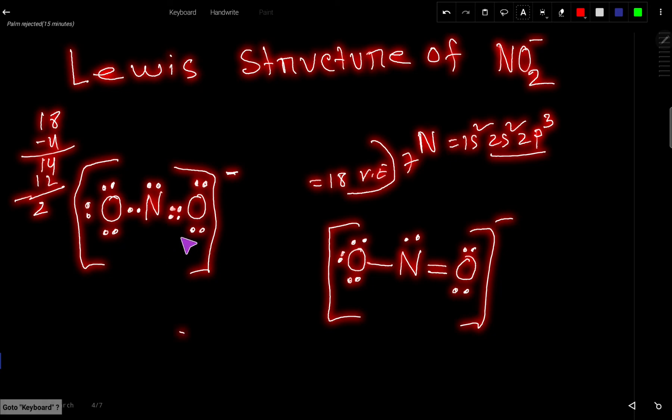This is the Lewis dot structure of NO2-. We can express bond pairs as dashes. 2 bond pairs, here 2 dashes. 1 bond pair, 1 dash. So this is the Lewis dot structure of NO2-.